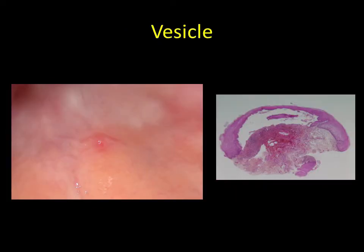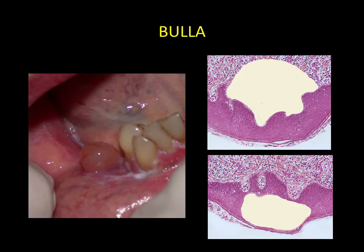Vesicles are fluid-filled tissue elevations. They are small, with a diameter of one to two millimetres. Bullae are also fluid-filled tissue elevations, but have a diameter in the region of a centimetre. The bullae may be intra-epithelial or sub-epithelial.